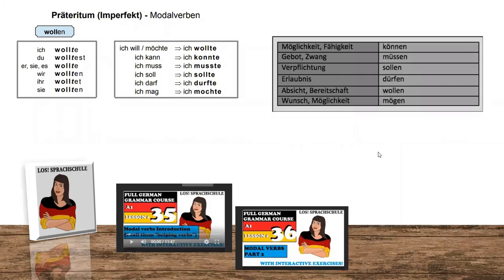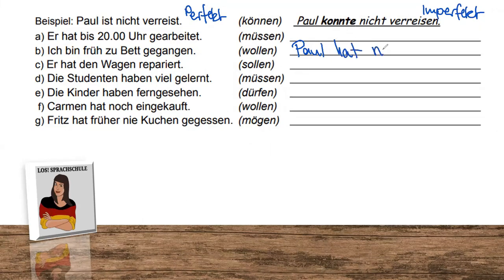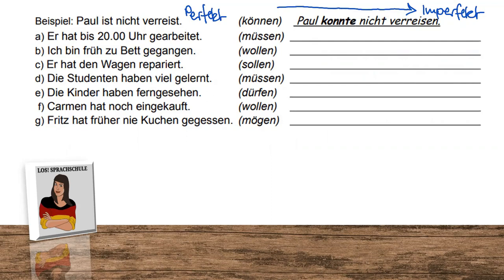Let's go to the first practice. The example: 'Paul ist nicht verreist' — that's perfect tense. Now in imperfect: 'Paul konnte nicht verreisen.' We cannot say 'Paul hat nicht verreisen gekonnt' — that is super wrong, I've never heard anyone say it. Please remember: when you have a modal verb, 99.9% of past expressions use imperfect. Press pause if you want to do the exercise first, then we'll compare.